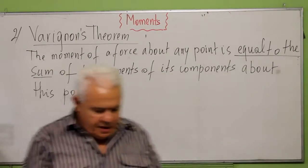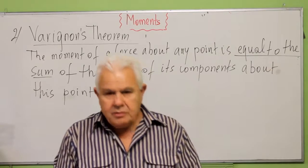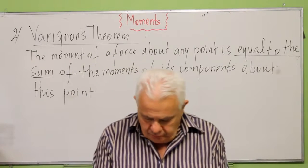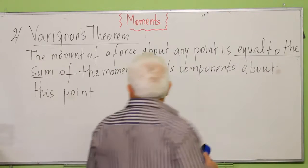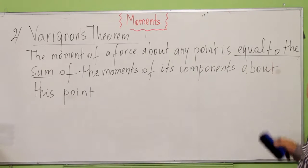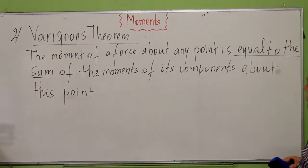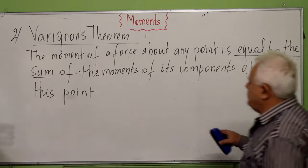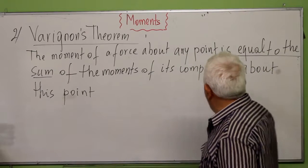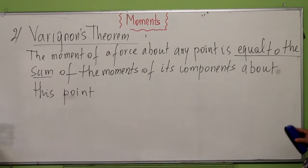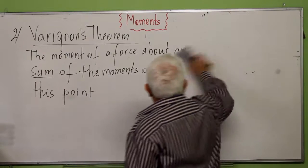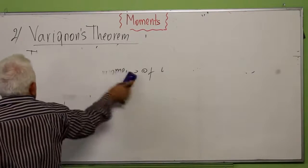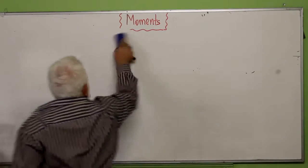To illustrate this, I will choose a simple example. The moment of a force about any point is equal to the sum of the moments of its components about this point. So we have to find the components of this force and try to find the moment about the point. Let's look at this example.